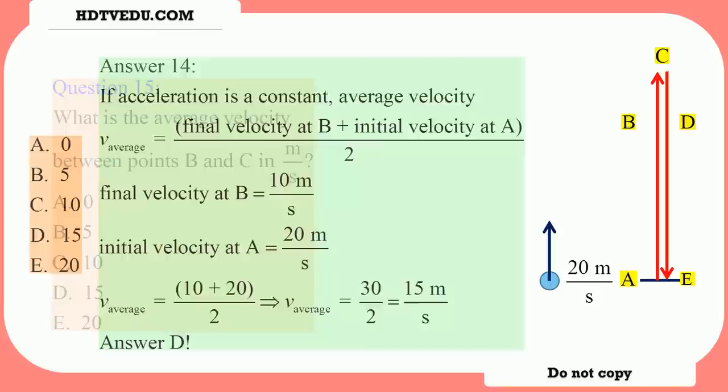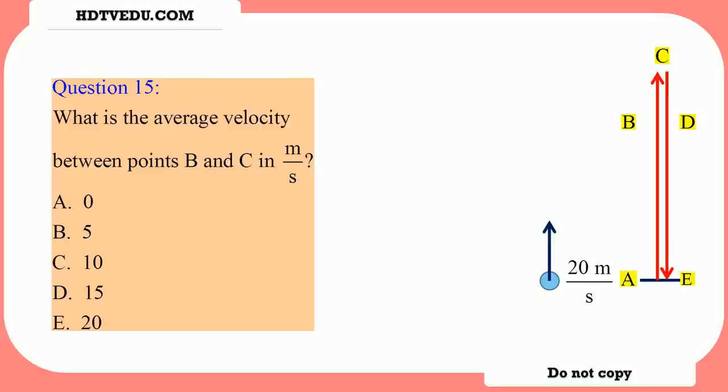What is the average velocity between points B and C in meters per second? At point B, velocity is positive 10. We define positive Y as vertically up. Velocity at point B is positive 10 meters per second. From B to C, it takes one second to reach point C. The velocity changes by negative 10 meters per second every second — that is the acceleration due to gravity. So 10 plus negative 10 is 0. Velocity at point C is 0.